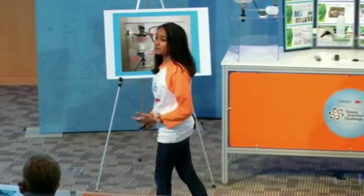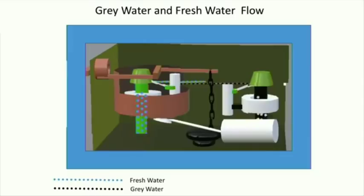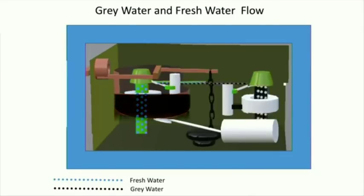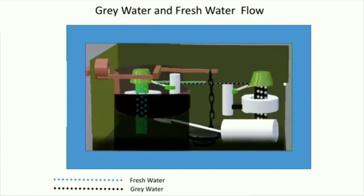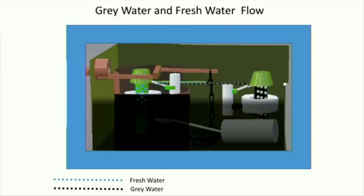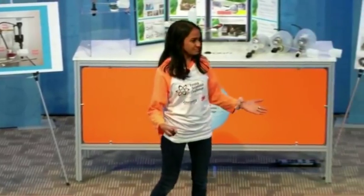Here is an animation of how my system worked for testing my hypothesis. As soon as the gray water fills the small tank, the fresh water stops, and the gray water overflows from the small tank into the main tank, and eventually stops the gray water by the action of the gray water float on the gray water fill valve. If the gray water is unavailable, then my system will work with the fresh water alone. In this case, the fresh water will fill the main tank first, and then it will overflow into the small tank to stop the fresh water.